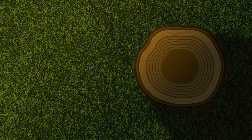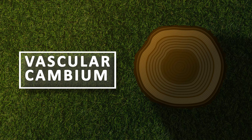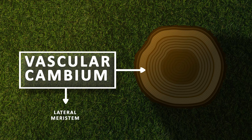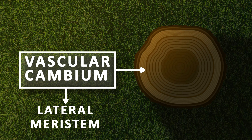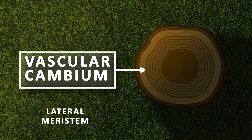Before I start discussing the different types of wood, let me explain what vascular cambium is and why it is important for this topic. The vascular cambium is a type of meristem, and to be precise, it is a lateral meristem on the basis of its position. Being a meristem, it is made up of actively dividing cells and is responsible for the formation of other types of tissues like secondary xylem and secondary phloem.